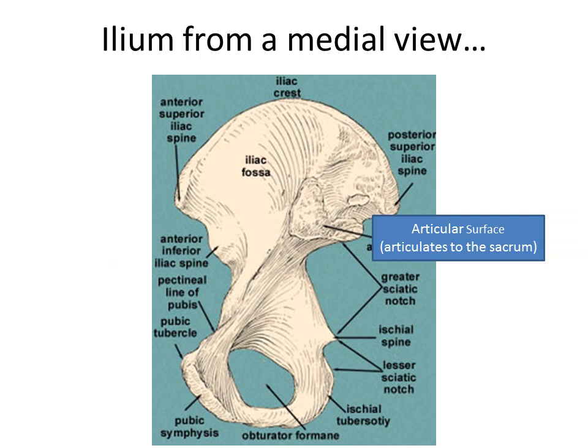Going back to the medial view, let's look at a few structures on the bottom. We have the ischial spine, located between the greater and lesser sciatic notch. There is the medial aspect of the ischial tuberosity, our sit bone. We can see the large obturator foramen, and the articulation for the pubic symphysis where the two hip bones join anteriorly. The top of the pubic symphysis is called the pubic tubercle, and we also have the pectineal lines of the pubis.